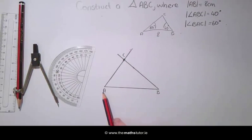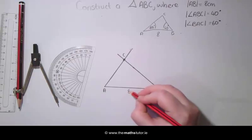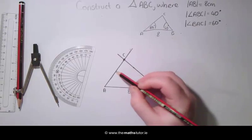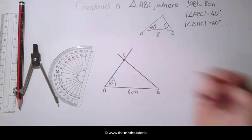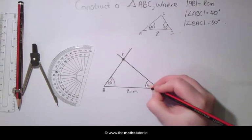So here we can see we have our line AB which is 8 cm. We have our angle at A which is 60 degrees and we have our angle at B which is 40 degrees.